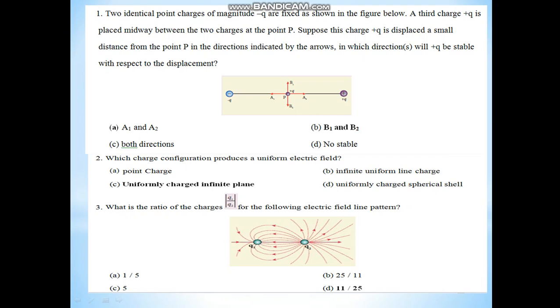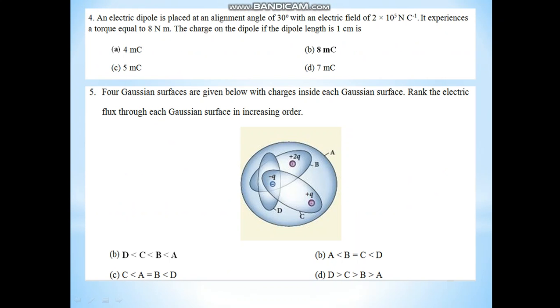Third question: What is the ratio of charges Q1 by Q2 for the following electric field lines pattern? Count the lines. Q1 has 11 lines. Total lines for Q2. Calculate Q1 and Q2. This is the third question.